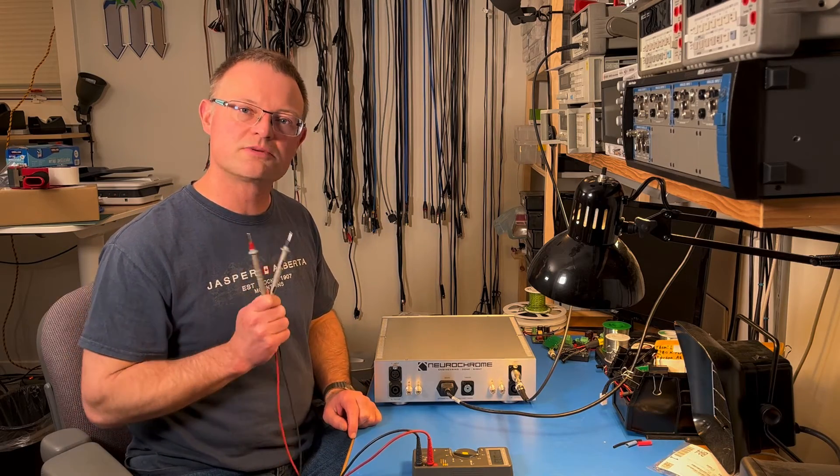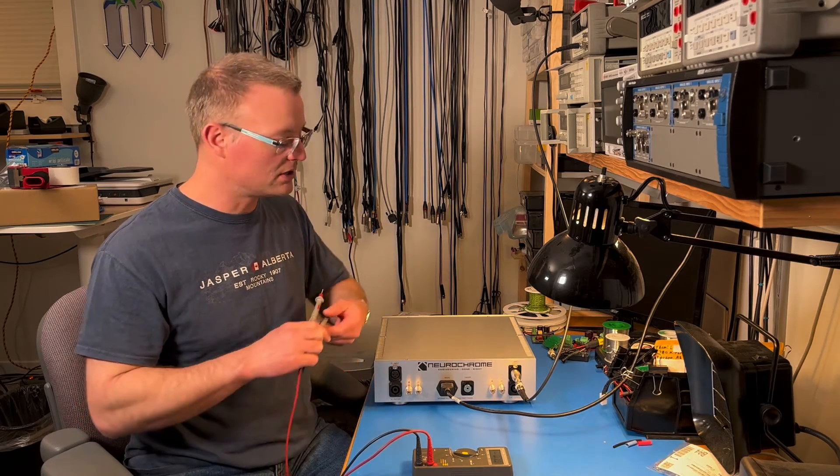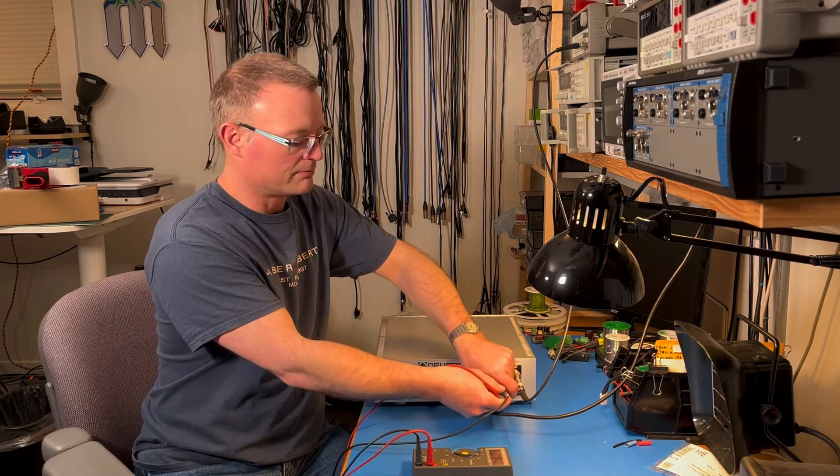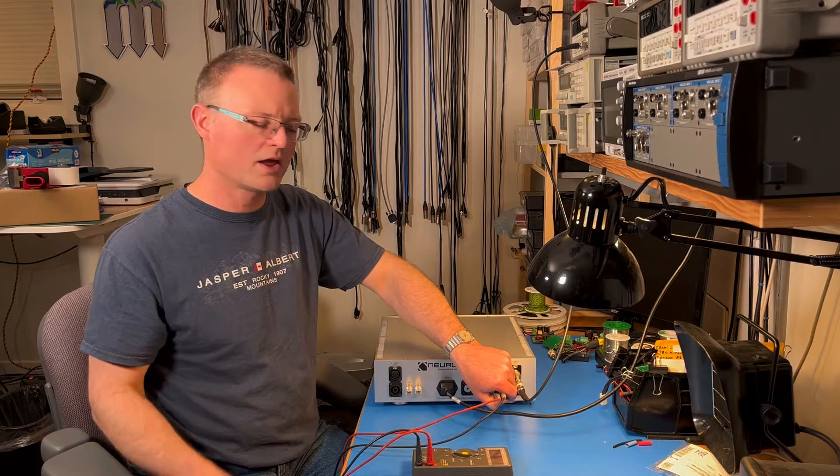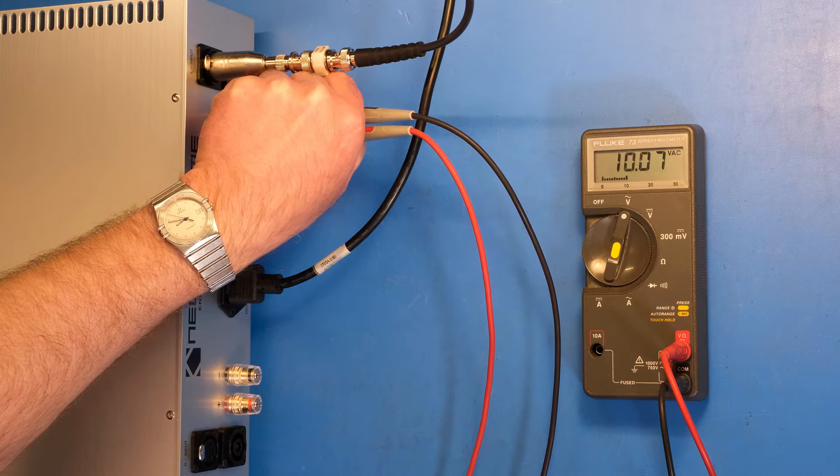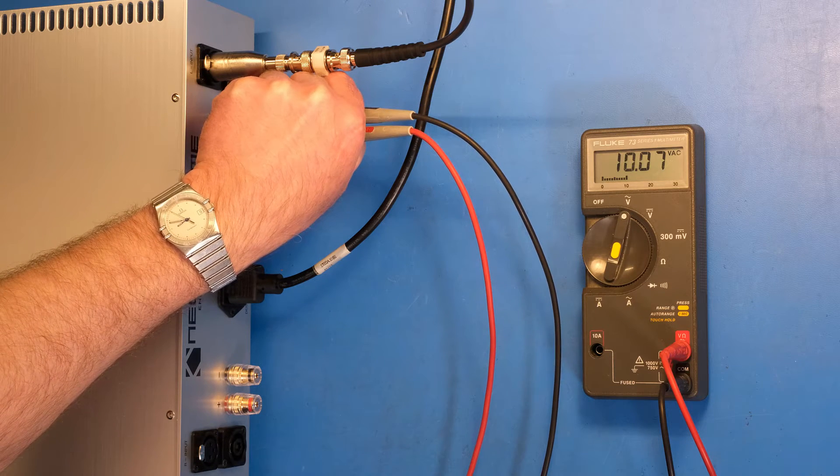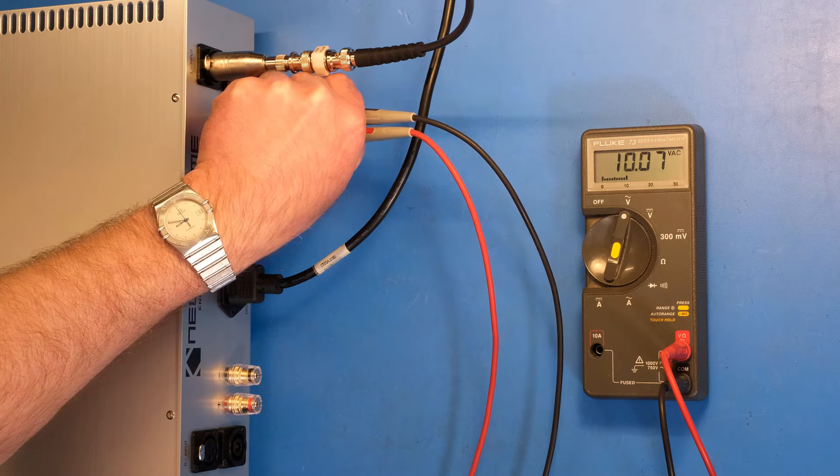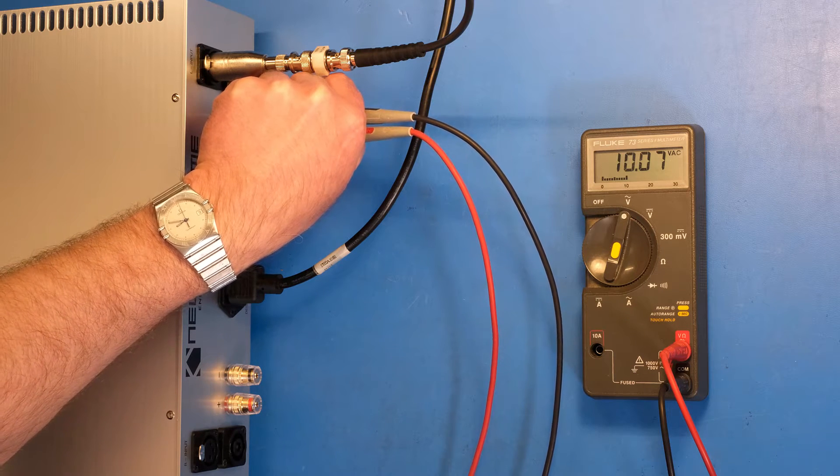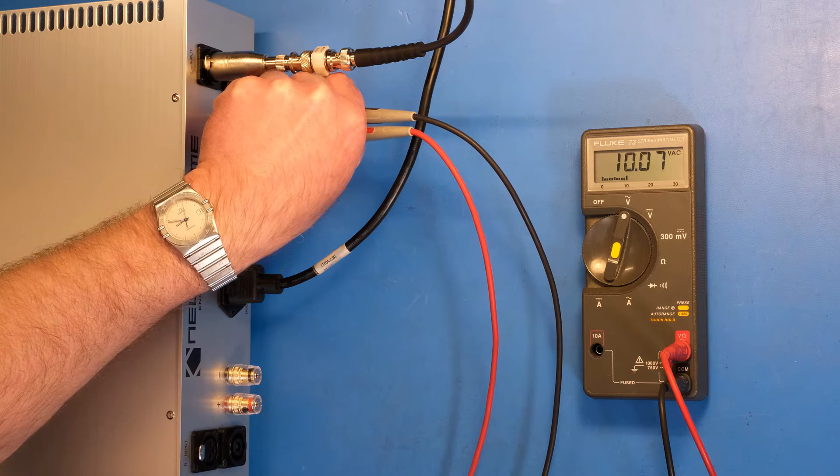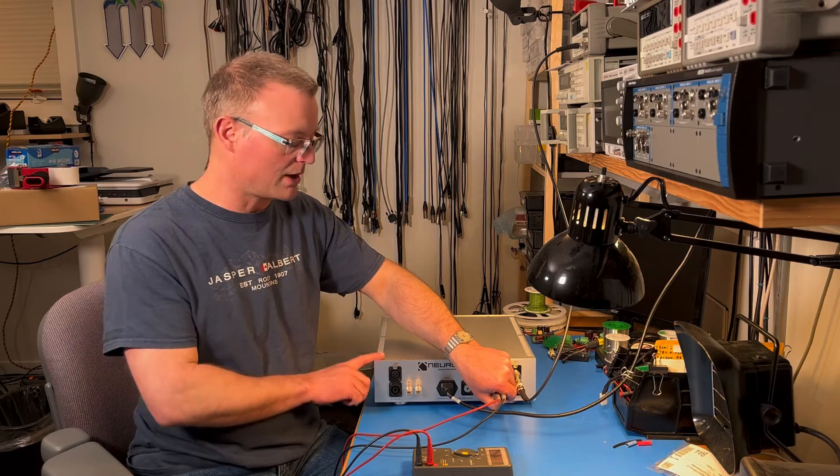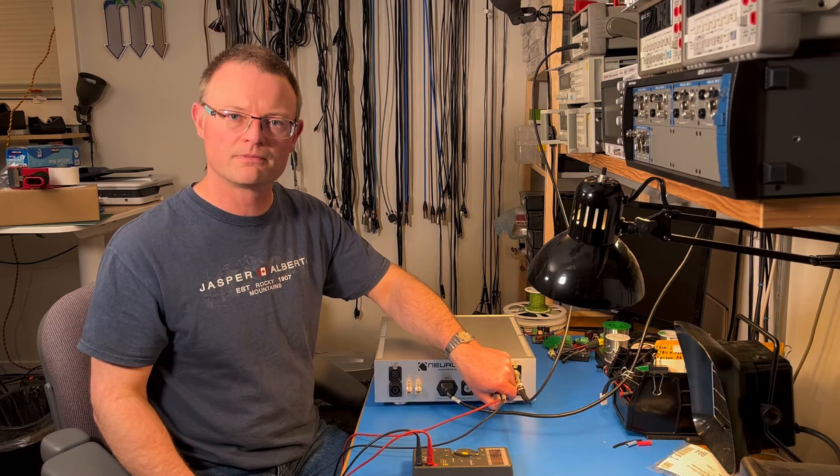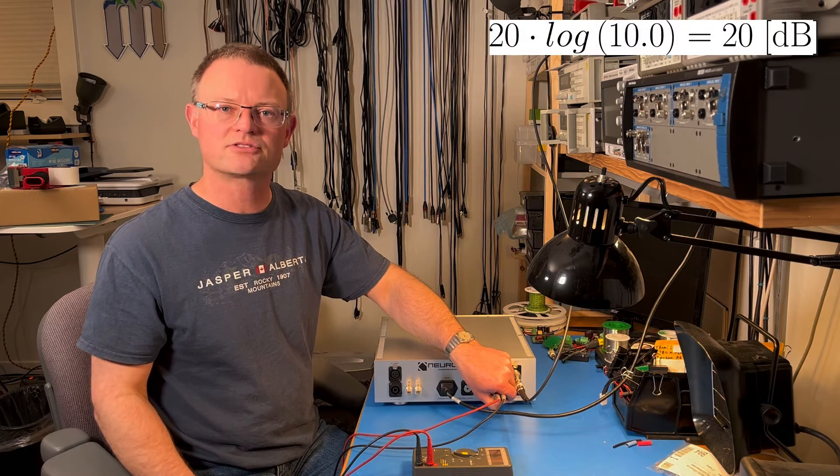And now let's measure the output voltage. So same deal. Negative probe on the minus and positive probe on the plus output of the amplifier. And the amp provides 10.07 volts. So 10.07 divided by 1.006 is almost exactly 10.0. So this amplifier has a gain of 10.0 volts per volt. That corresponds to a gain of 20 dB.